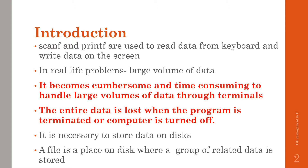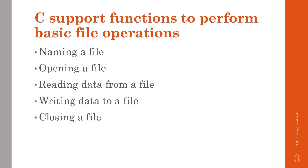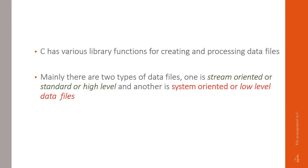A file is a place on disk where a group of related data is stored. C supports functions to perform basic file operations. The basic file operations are: naming a file, opening a file, reading data from a file, writing data to a file, and closing a file. C has various library functions for creating and processing data files.